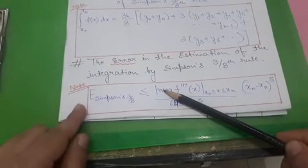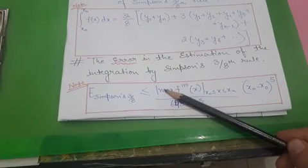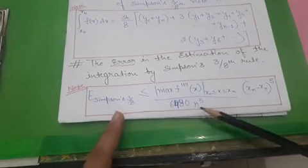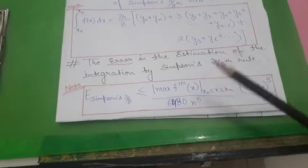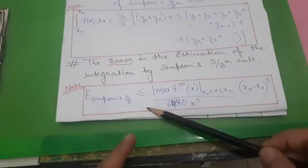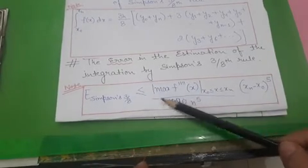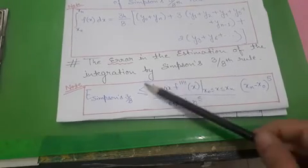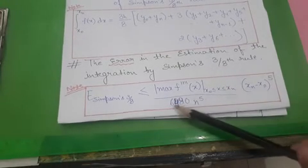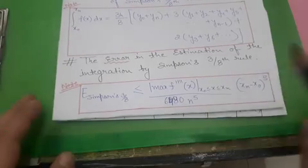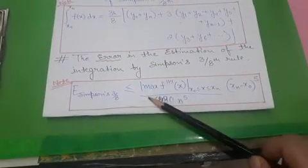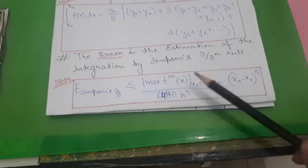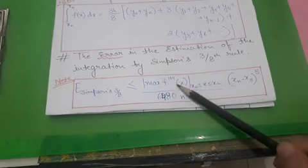For error estimation, you use the error formula for Simpson's 3/8 rule. The error is always less than or equal to the maximum error, which is the maximum possible value of the error in the answer found using this rule. The error is less than or equal to the maximum of the magnitude of the fourth derivative of the function, f⁽⁴⁾(x), multiplied by (xn − x0)⁵, divided by 6480·n⁴, where n is the number of intervals.